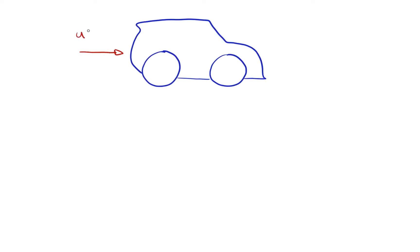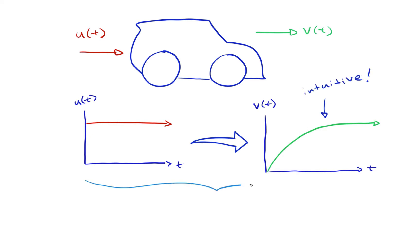In the previous video, we saw that if you apply a constant amount of thrust to a vehicle, the output looks something like this. We knew this intuitively. We also learned that Simulink requires a mathematical model that captures the system dynamics.